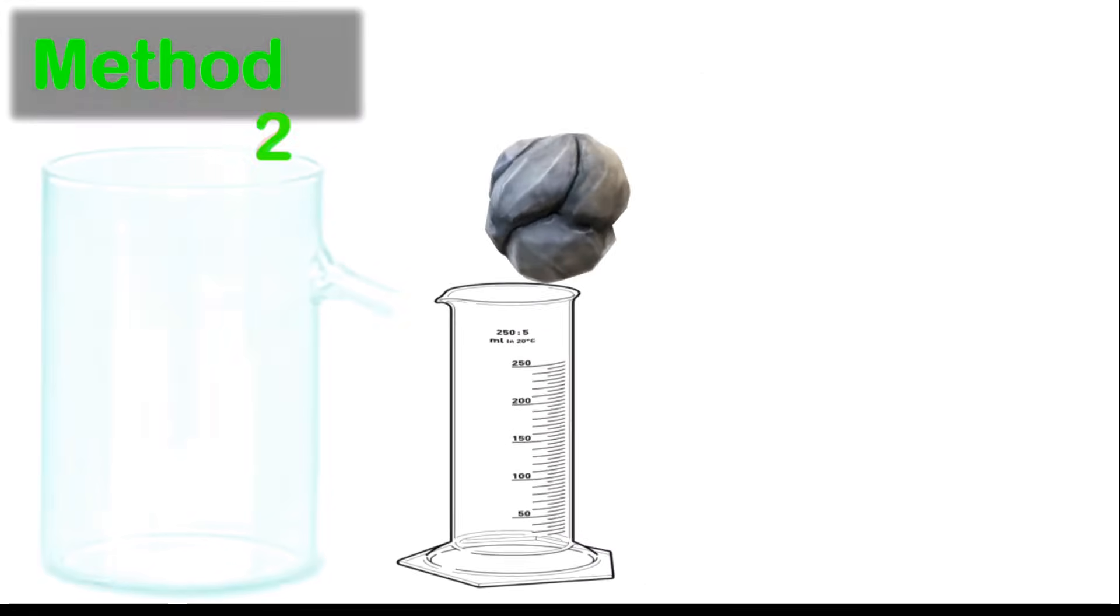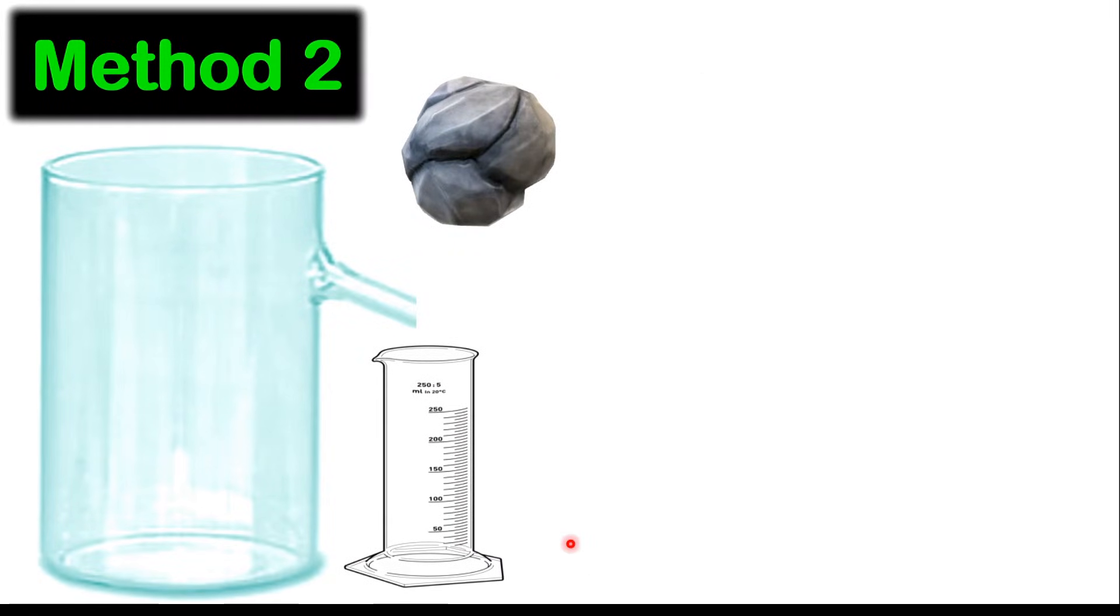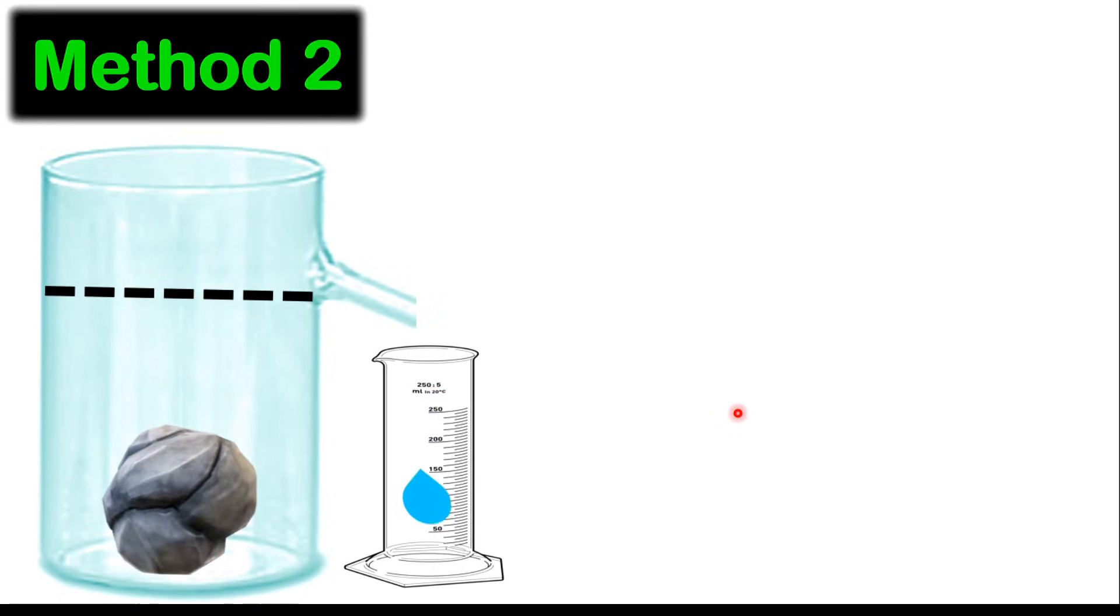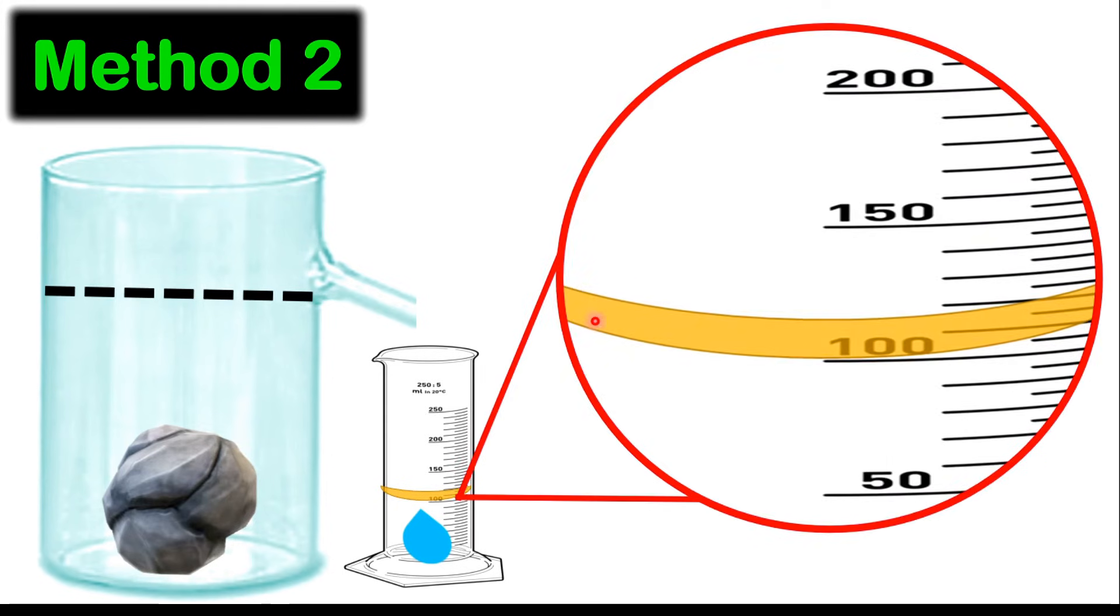Method two uses a displacement can or what we call a Eureka can. First, pour liquid into this can to make sure the liquid will be at a level where all the liquid will start running out and then stop. After that, place your measuring cylinder next to that can. Then insert your object. Notice once you insert the object, liquid will start to flow out of that can. Once the liquid has flown out, you can measure the volume. There will be a meniscus, so you're going to read that meniscus. For example, this meniscus may fall on the 100 mL mark. This means the liquid in the measuring cylinder has a volume of 100 mL. Because the irregular-shaped object will displace the same volume of water.